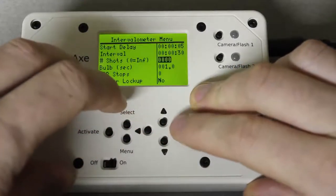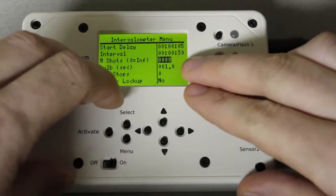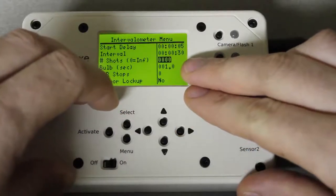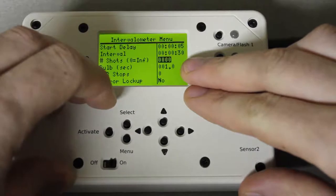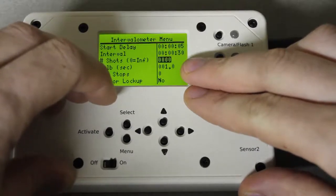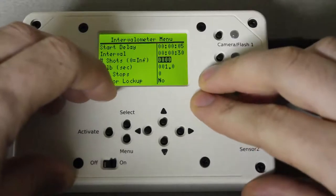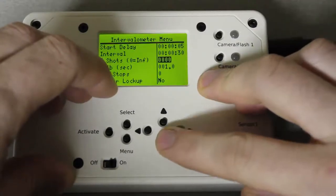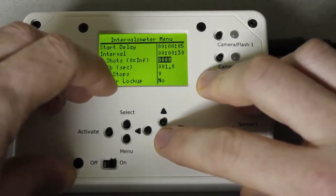Number of shots: if this is 0 it'll take an infinite number of shots. If you want to only take a couple hundred shots, let's say you want to take 50 shots, you'd set this to 50 and then after 50 shots it'll stop taking photos. So that can be pretty useful.